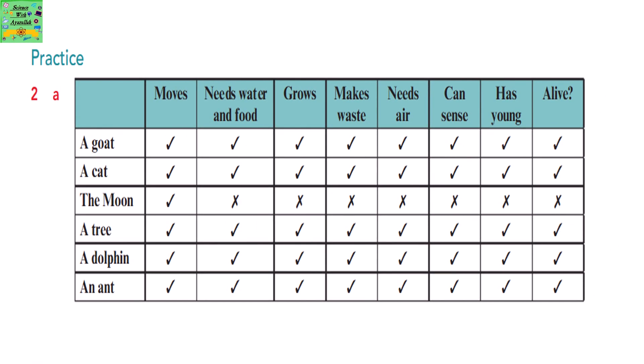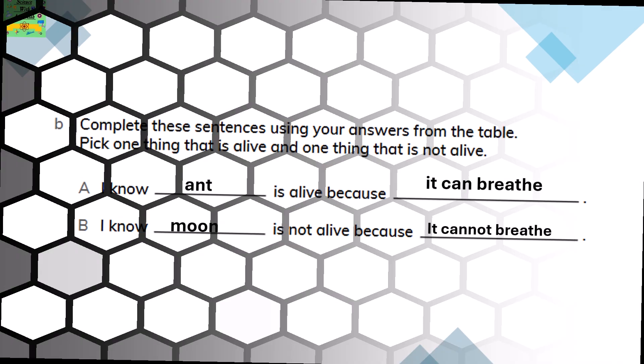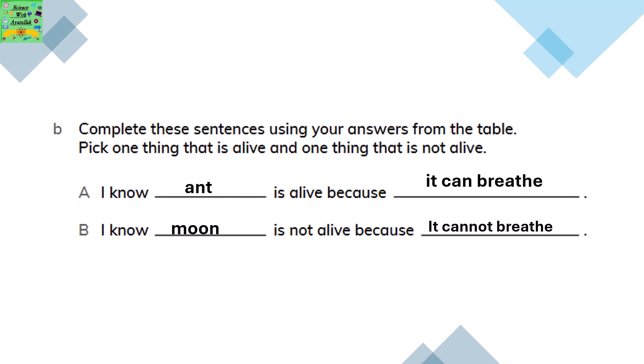This is the correct answer. Complete these sentences using your answers from the table. Pick one thing that is alive and one thing that is not alive. I know ant is alive because it can breathe. I know moon is not alive because it cannot breathe.